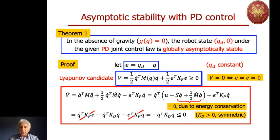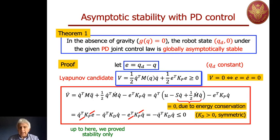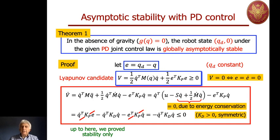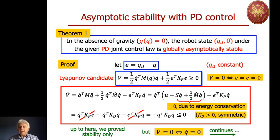Up to now, we have proved only stability. We have found a Lyapunov candidate whose derivative is ≤ 0, so the equilibrium is stable. But this is not the full thesis of the theorem — there is still something to do, in particular by use of the LaSalle theorem.